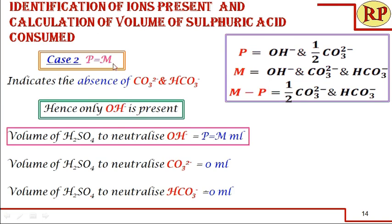Case 2: P = M. Here, after the phenolphthalein endpoint, when methyl orange is added, instead of turning yellow, it is directly reddish orange — meaning no alkalinity remains beyond the phenolphthalein endpoint. This tells us that carbonate and bicarbonate are absent. The only possibility is that only hydroxide is present. All sulfuric acid consumed, P ml (equal to M ml), is solely for neutralizing the hydroxide ion.